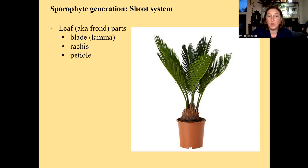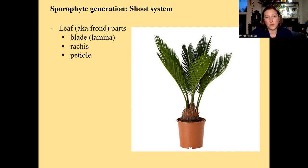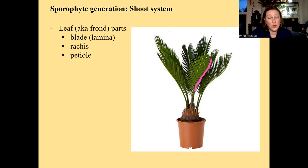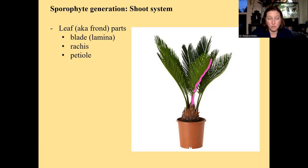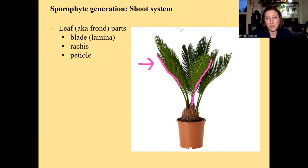Cycads have compound leaves like ferns, so it's not just a simple flat green surface — it's all these leaflets together that form the blade or lamina. Then you have the rachis, which is the part of the stem that goes all the way through the lamina. And then the petiole, which is the part of the stem that's below the blade. These are terms we've already covered in the ferns.